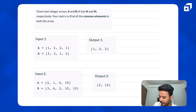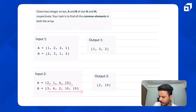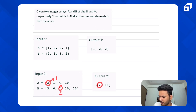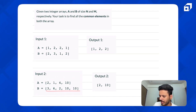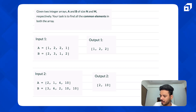Let's see another example. The first array is [2, 1, 4, 10] and the second is [3, 6, 2, 10, 10]. Two is one time in both arrays, so it's in the output. One is in A but not in B. Four is in A but not in B. Ten appears once in A and twice in B, so common instances are one — only one ten in the output.